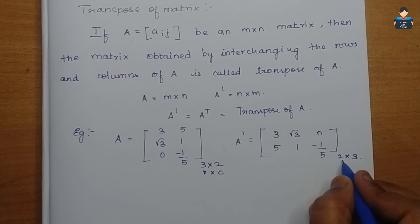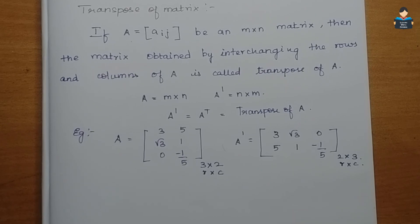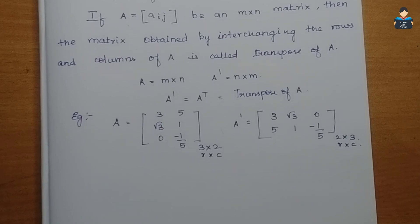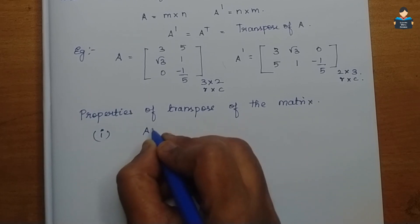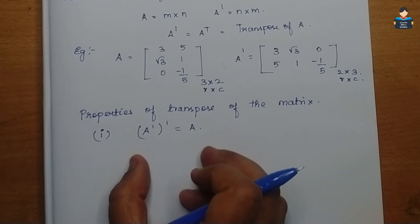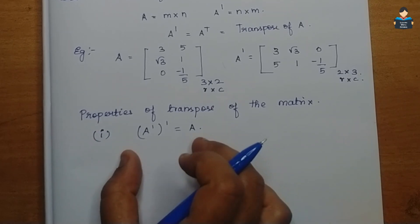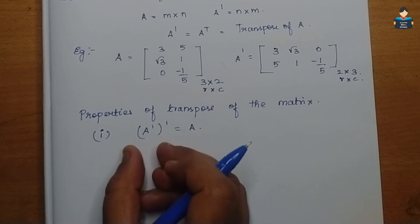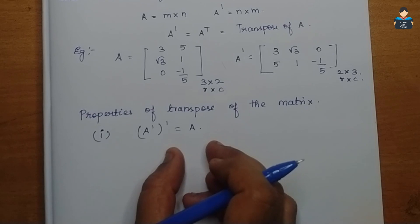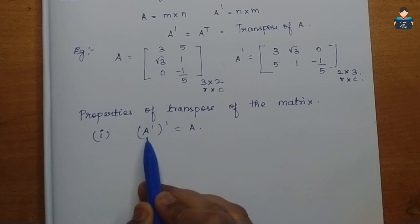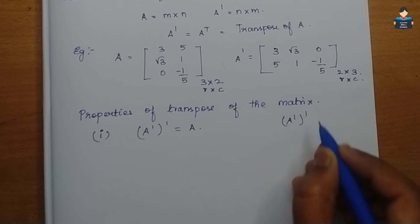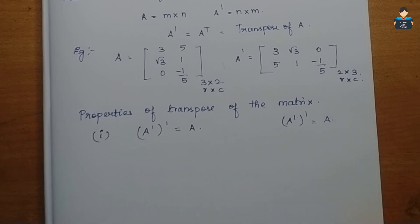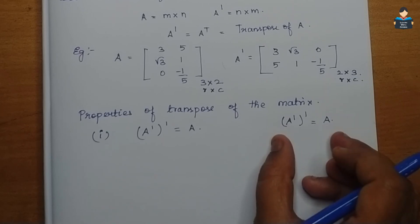In the transpose of a matrix, in the book we have 4 properties. The first property: (A')' = A. That is, the transpose of the transpose of a matrix equals the original matrix A.